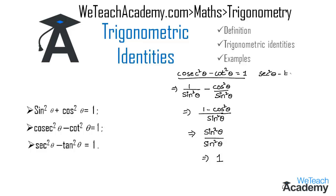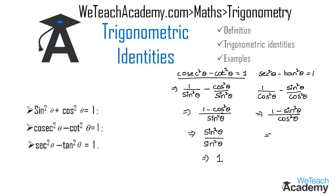For the third identity, secant²θ − tan²θ = 1, we write secant²θ = 1 / cos²θ and tan²θ = sin²θ / cos²θ. With a common denominator cos²θ, the numerator is 1 − sin²θ. Using the first identity, 1 − sin²θ = cos²θ, so cos²θ / cos²θ = 1. Hence secant²θ − tan²θ = 1 is true for all values of θ and is also an identity.